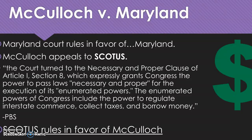McCulloch is able to appeal because we're now talking about interstate commerce — a federal agency and a state agency have crossed boundary lines. The Supreme Court says that according to Article I, Section 8 of the Constitution, the necessary and proper clause emboldens Congress and permits it to perform any actions which enable it to carry out its intended duties. In this case, the power to impose taxes and regulate interstate commerce belongs to Congress, not to the state. Maryland cannot tax a federal institution, so the Supreme Court rules in favor of McCulloch and the Bank of the United States.